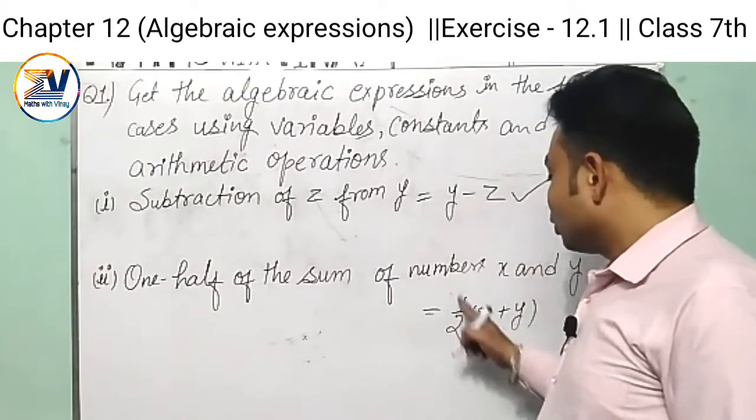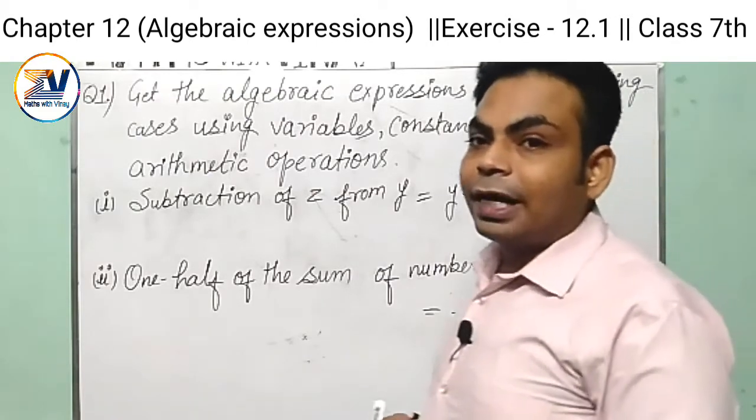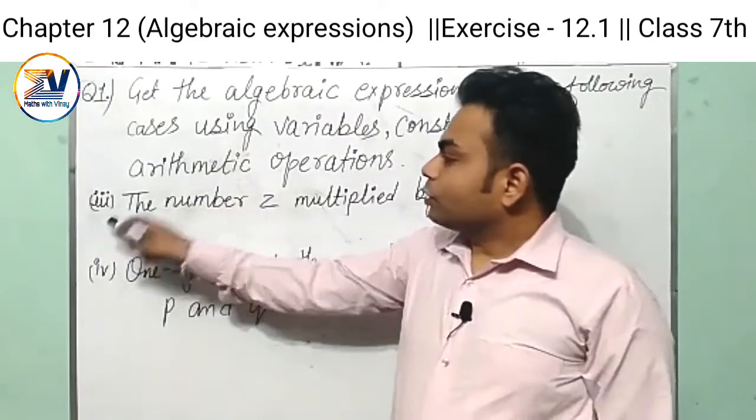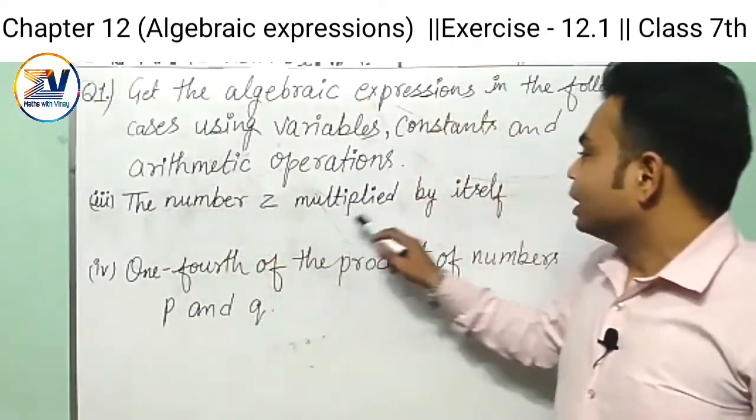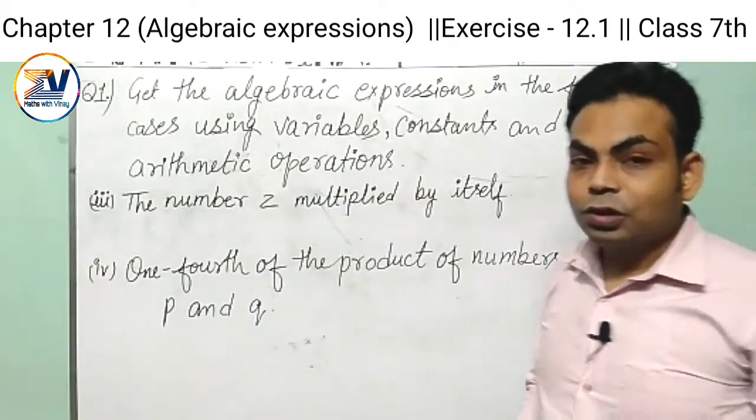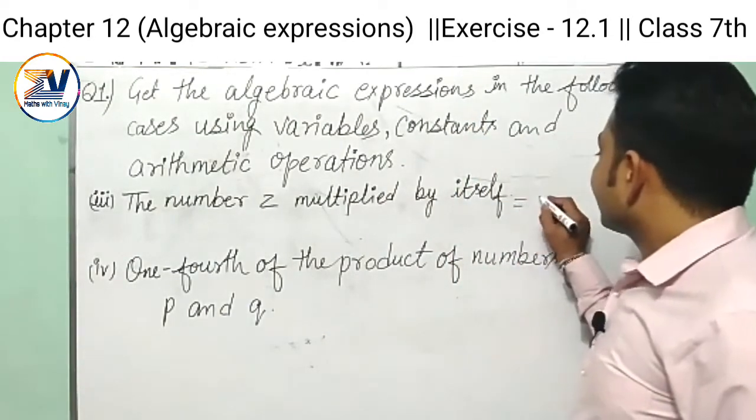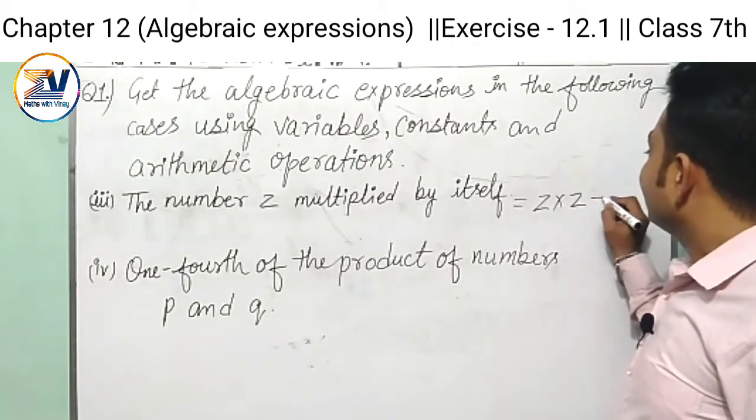Now we go to the next one. The third part of this question is the number z multiplied by itself. In this question we need to multiply z by z itself, so the expression is z into z, we get z squared.